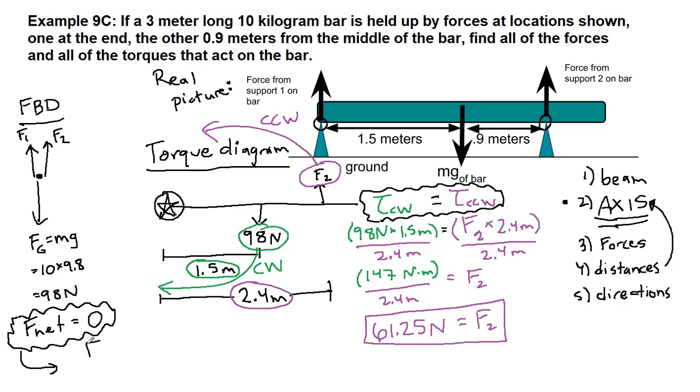F net equals 0. This is the other requirement for a static equilibrium problem, and so we look at our force diagram. F1 points up, F2 does as well, so we'll add it. And gravity points down, so minus 98, all that equals 0.